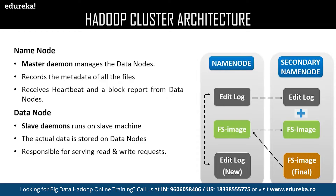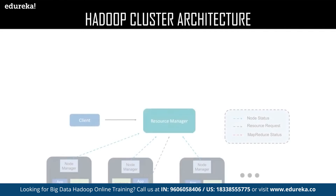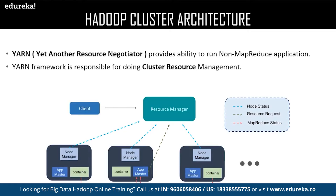Data nodes are called the slaves of name node. They are responsible for storing the actual data and updating the task status and health status to the name node in the form of a heartbeat. The secondary name node is not actually a backup of the name node, but acts as a buffer which saves the latest updates to the FS image obtained in the intermediate process and finally updates them to the final FS image.